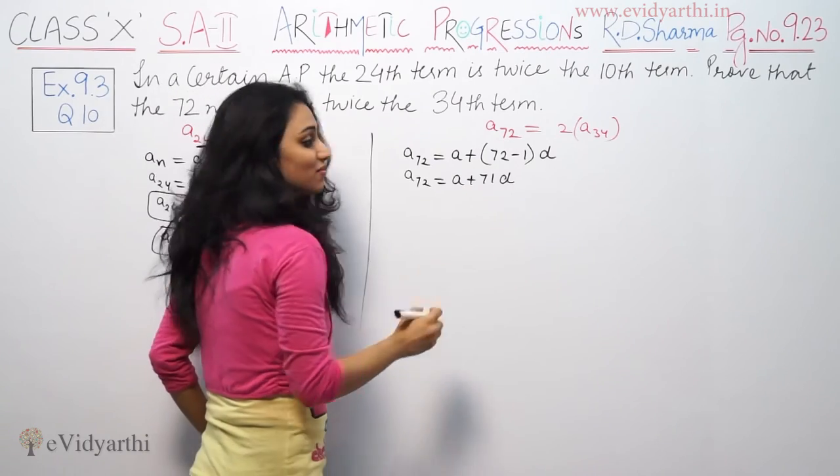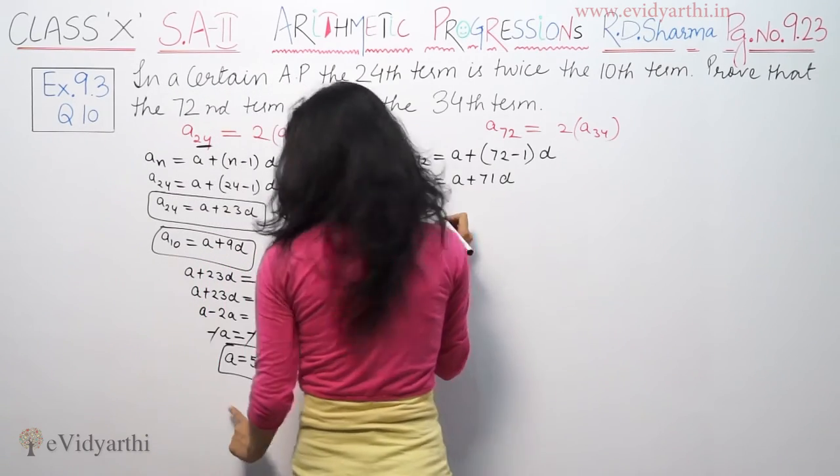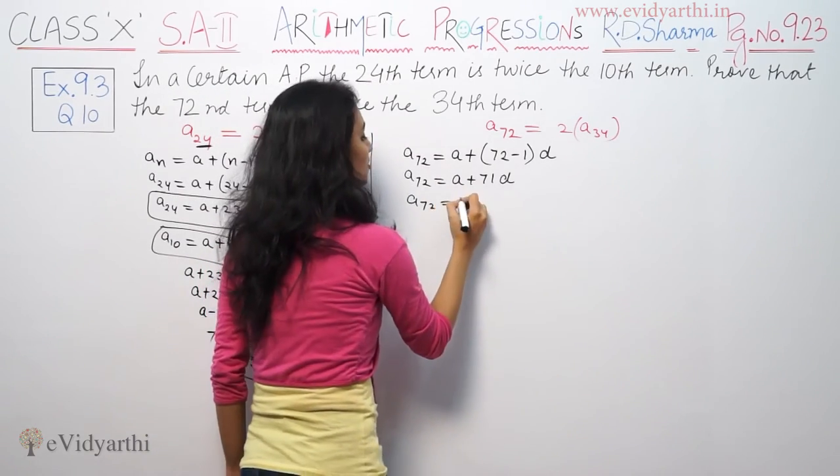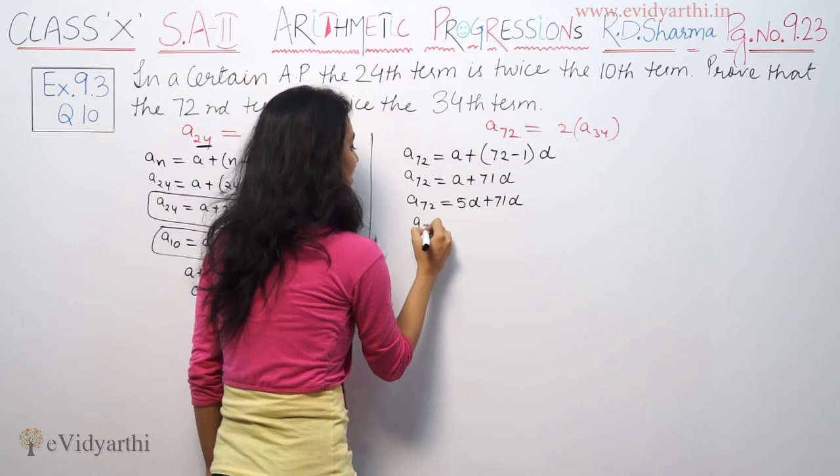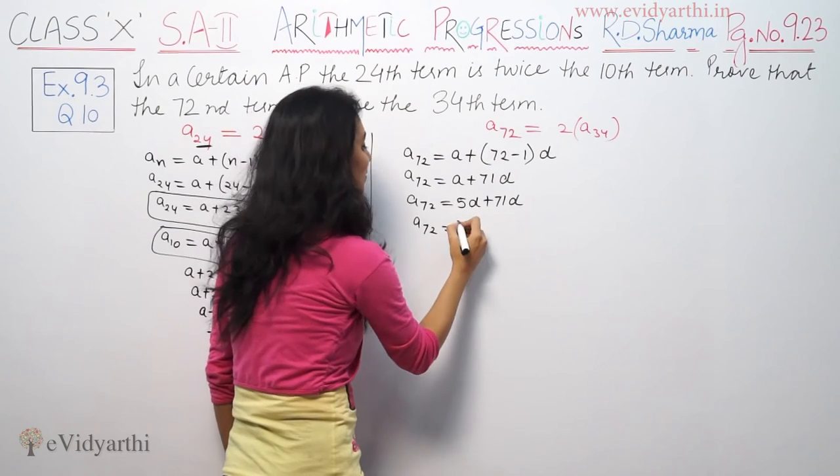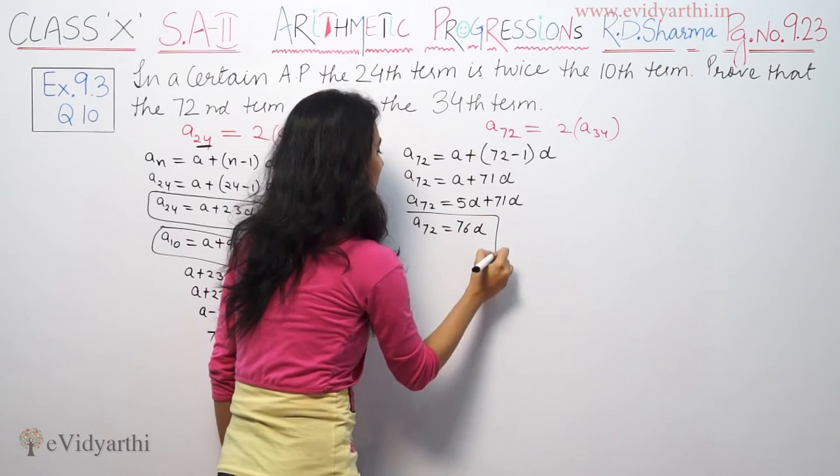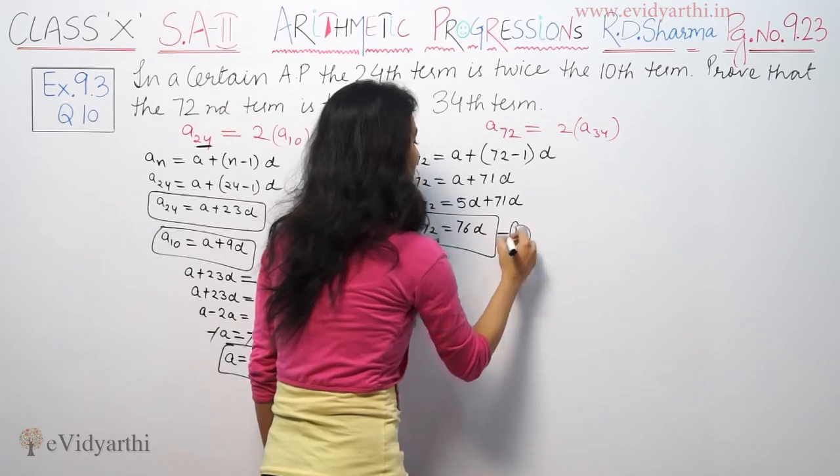And A is equal to 5D. So A value is 5D. A is equal to 5D plus 71D. A72 is equal to 71D plus 5D which is 76D.